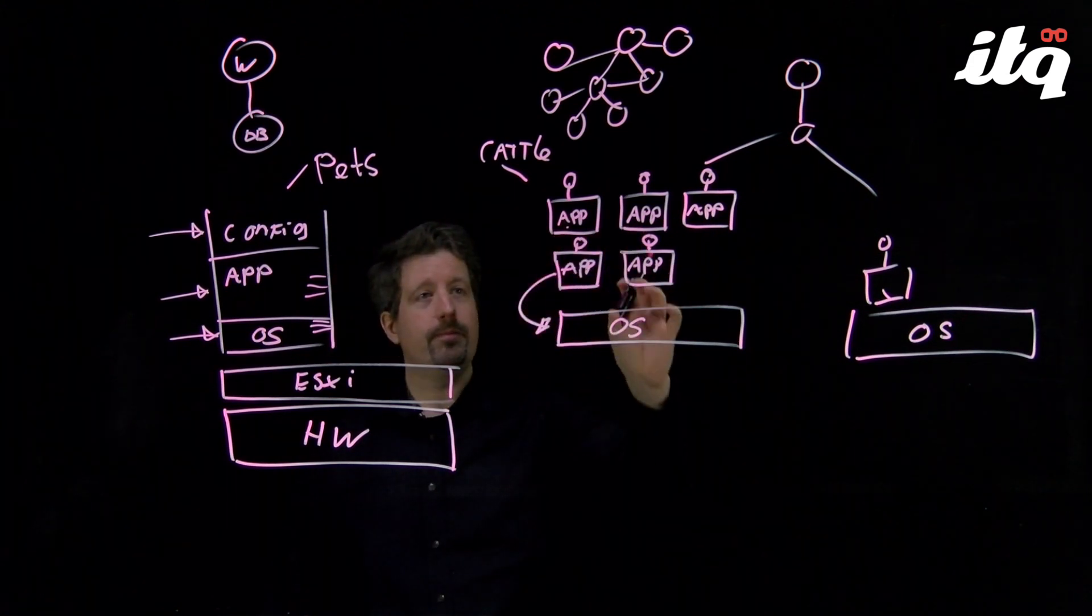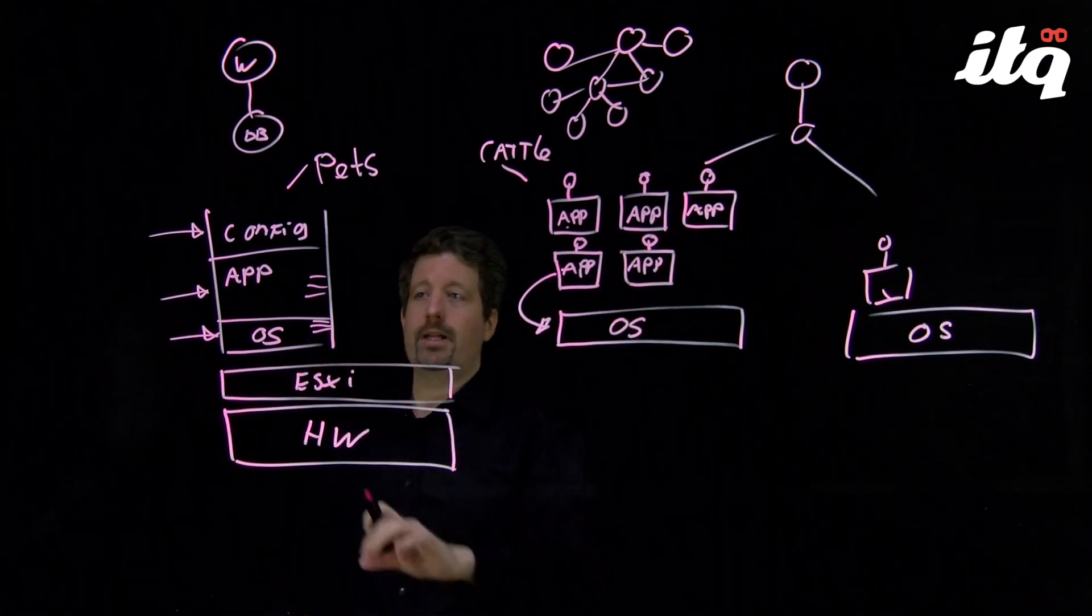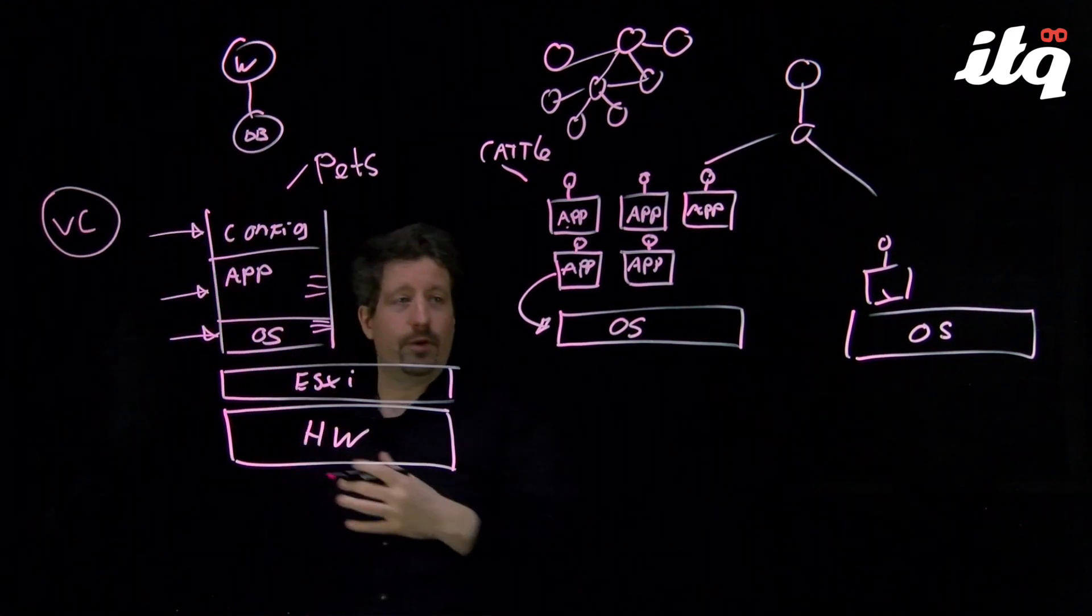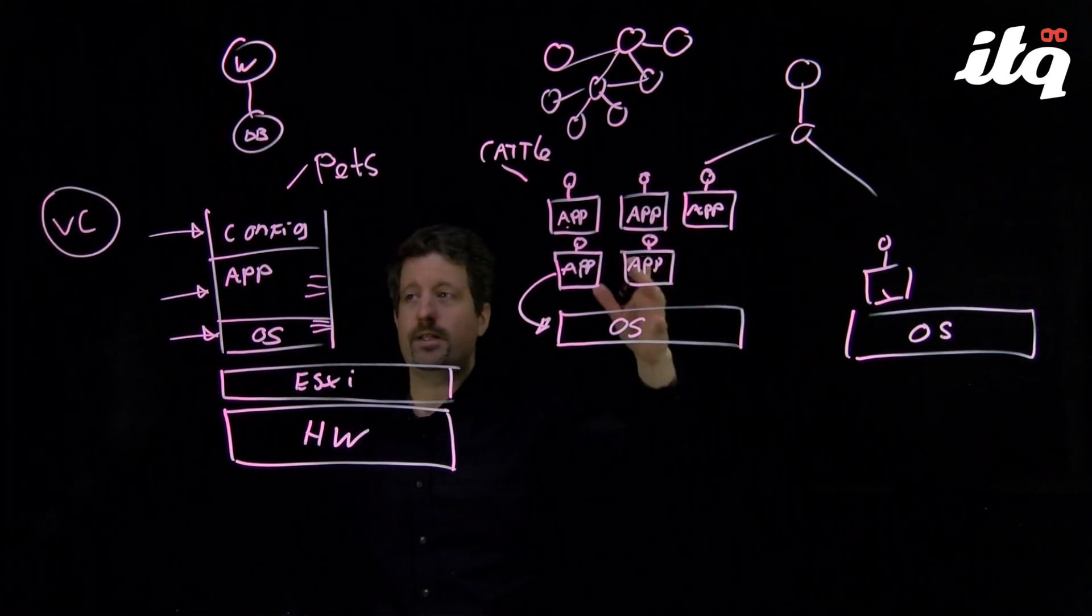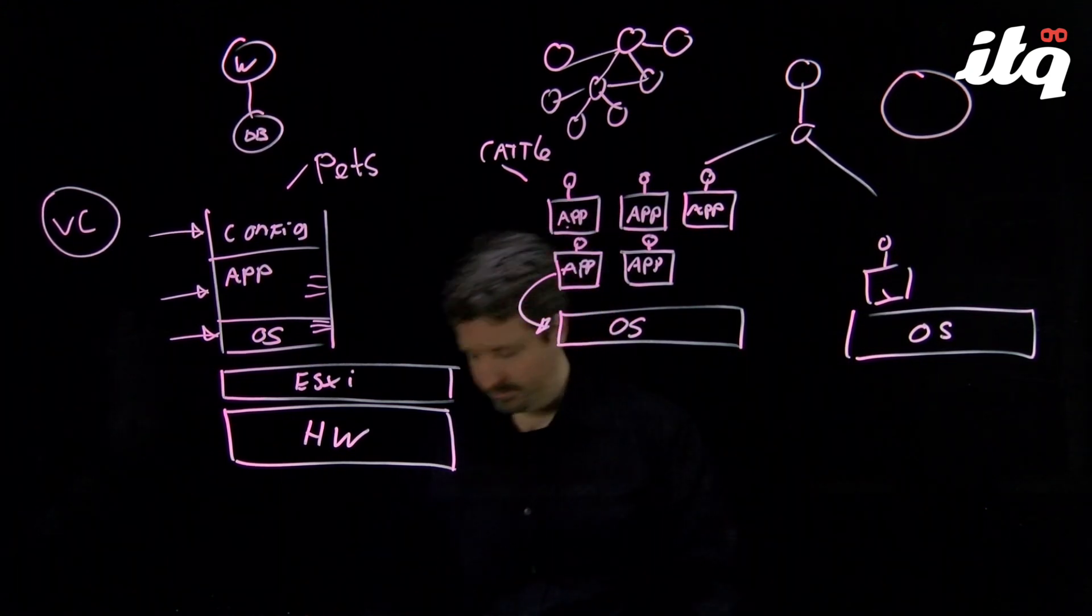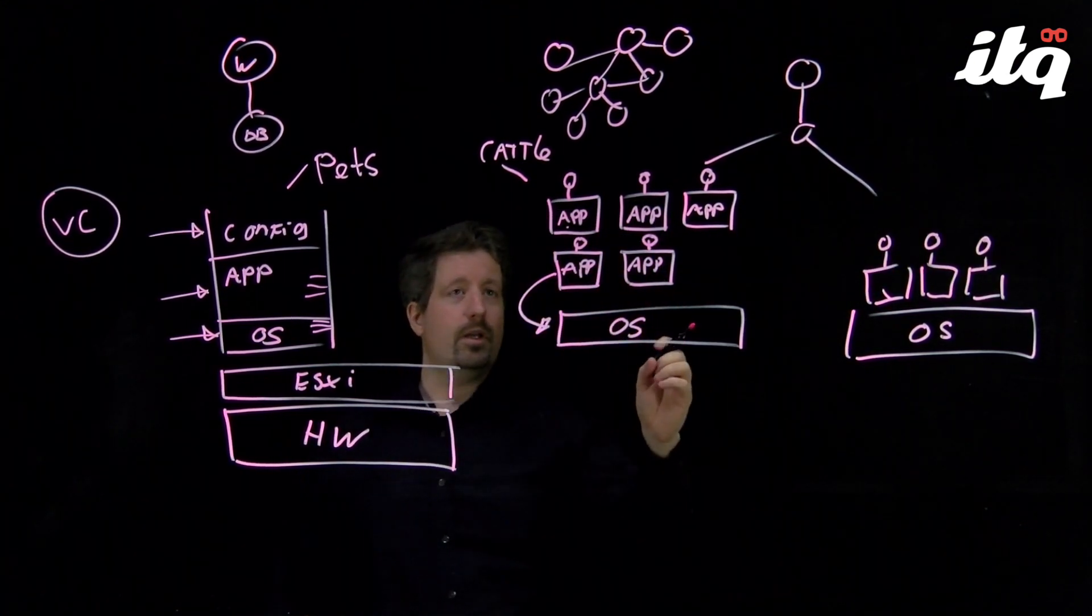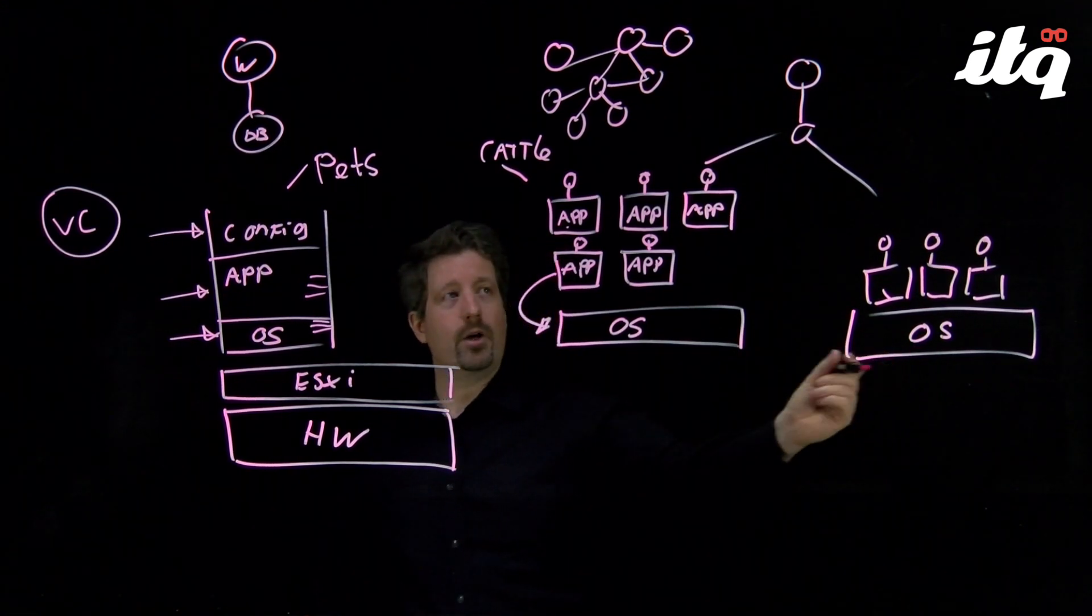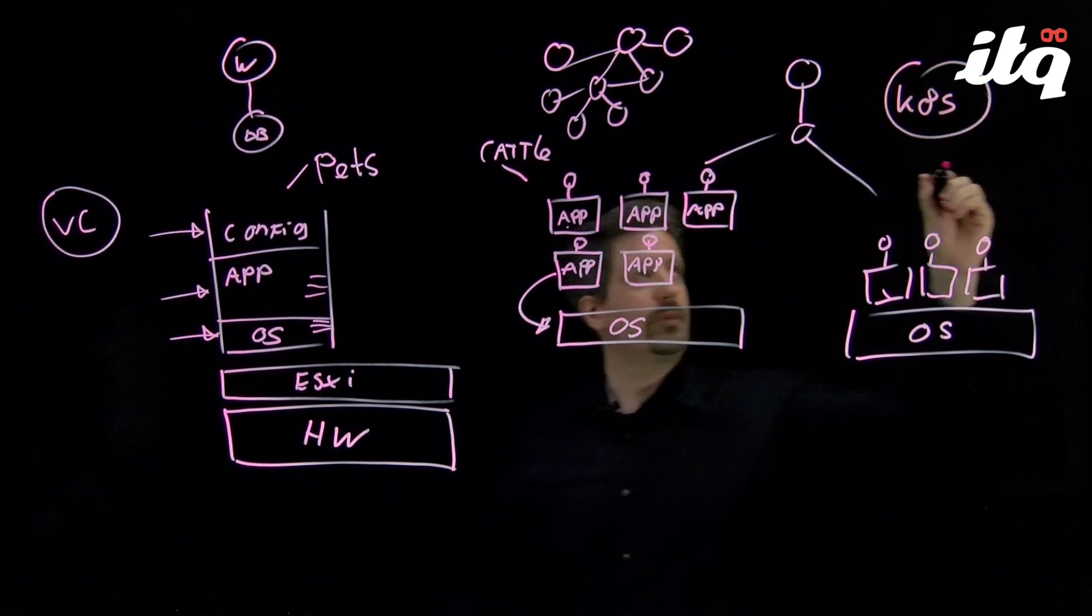This difference between pets and cattle means that these logical objects are managed in a very different way. Just like with VMs, we need a control plane to manage the VMs and the placement of VMs on our underlying infrastructure. In the VMware world, we know that as the vCenter. In the container landscape, we need a similar control plane. We need some kind of orchestration to place and schedule the running of our containers across our different underlying OS hosts. The standard for this is Kubernetes, which we write as K8s.